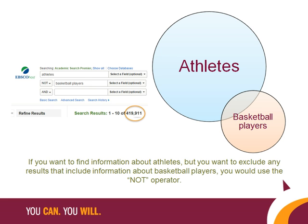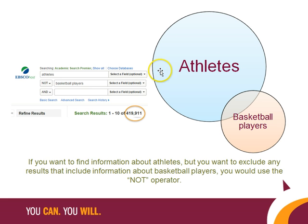In this example, the Boolean operator is NOT. This search string will return results for all kinds of athletes, but NOT basketball players. Notice the light blue section of the diagram. There might be some information about basketball players that's NOT included in this information about athletes.